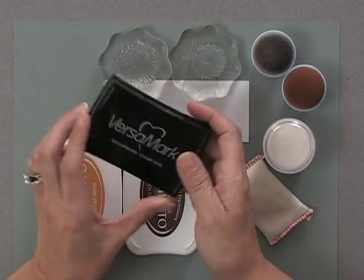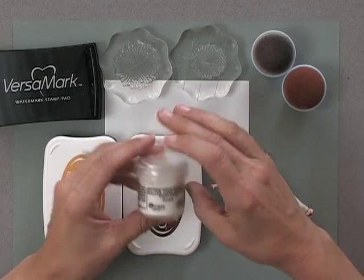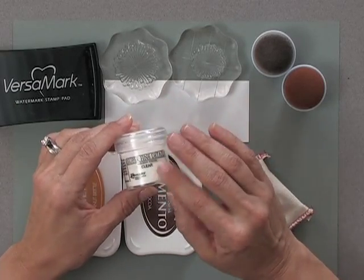Let me show you the tools and products you're going to need to do this technique. First, you're going to need some Versamark ink. I have a Versamark ink pad along with some fine detail clear embossing powder.